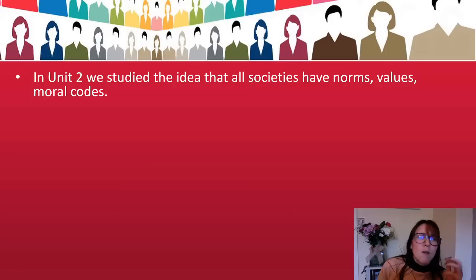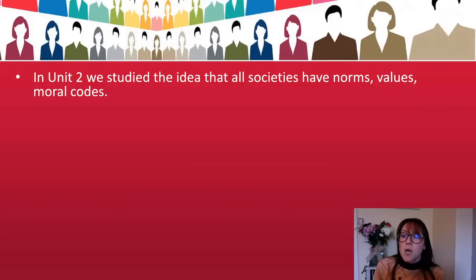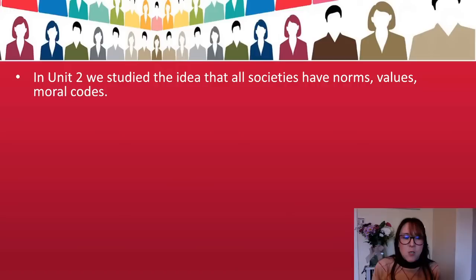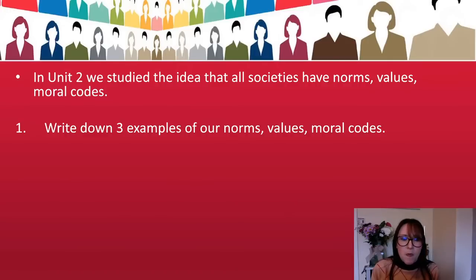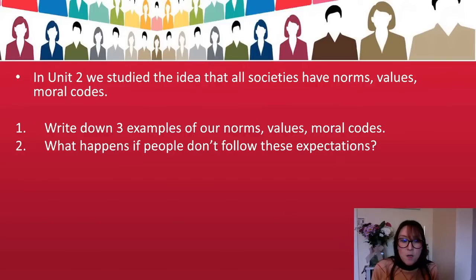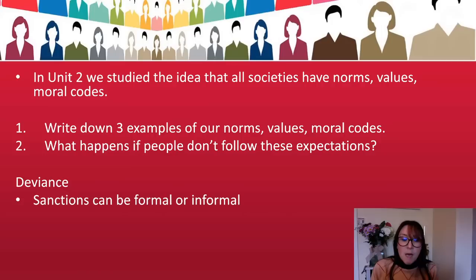We looked at people like Freud, Skinner and Bandura. We looked at things like the genetic makeup of people. I got my students to write down three norms, values and moral codes — three things in society that we do and follow. I then got them to write down what happens if people don't follow these, and this links in with the ideas of deviance.